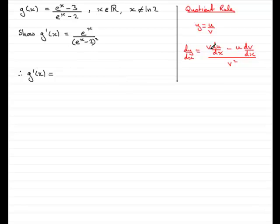well, it's the bottom of the fraction times the differential of the top of the fraction. So, we've got the bottom of the fraction, e^x minus 2, so just put that in brackets, and we need to multiply it by the differential of the top of the fraction. Differential of e^x is e^x, differential of minus 3 is 0, so we've just got e^x.